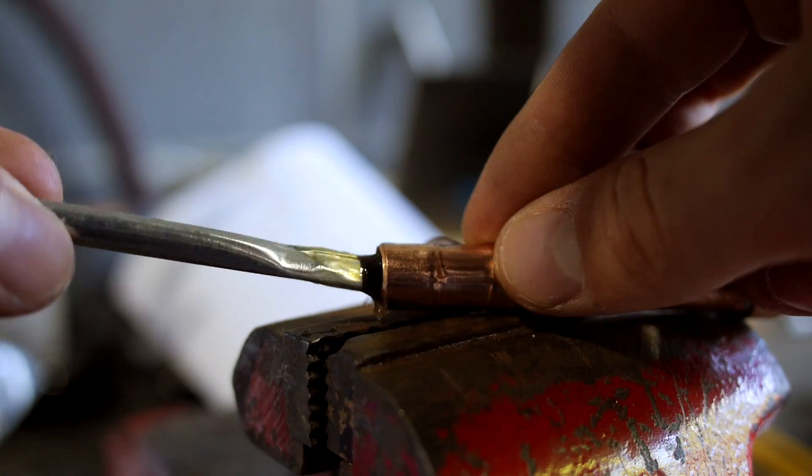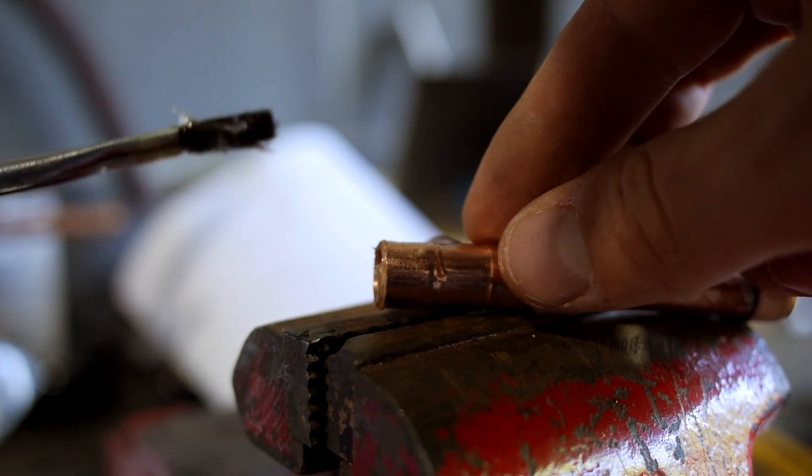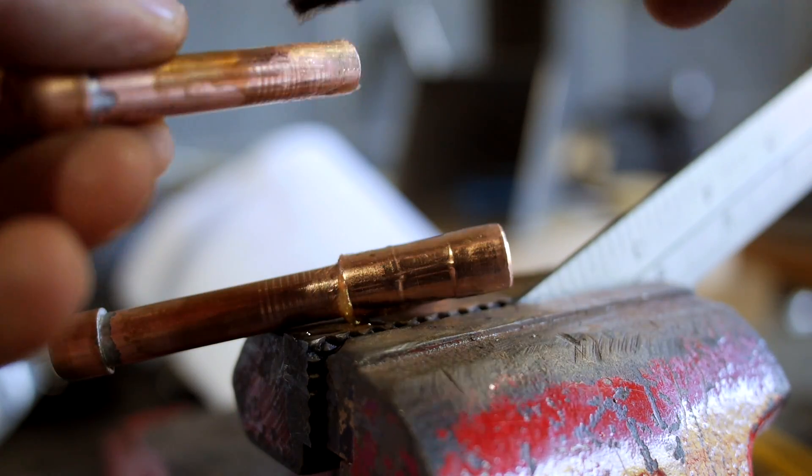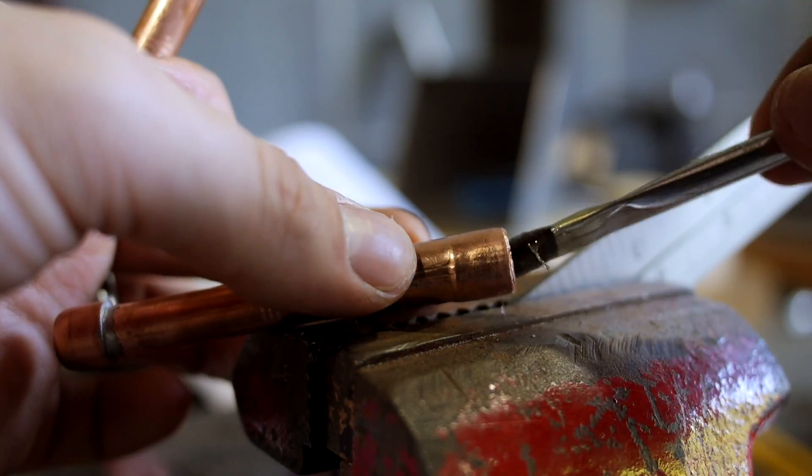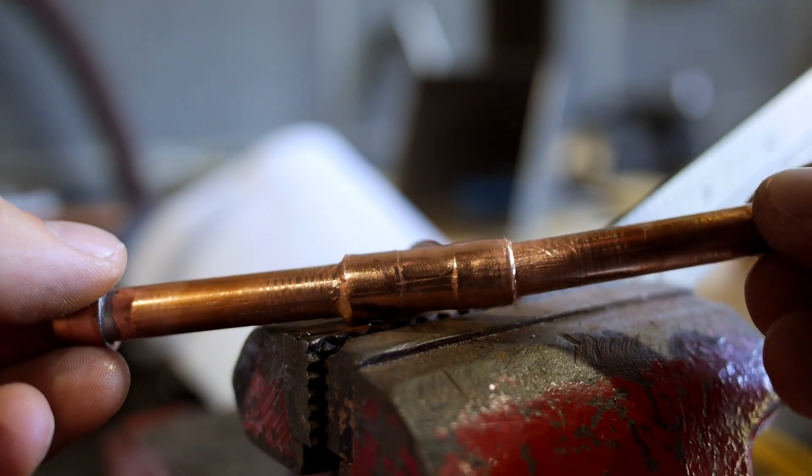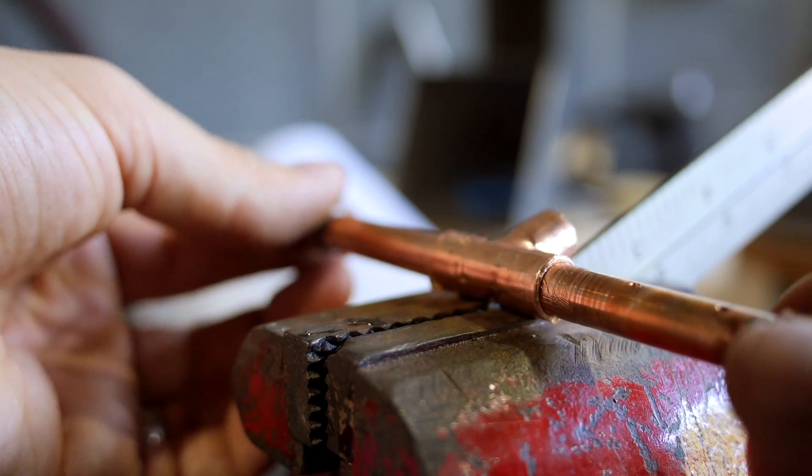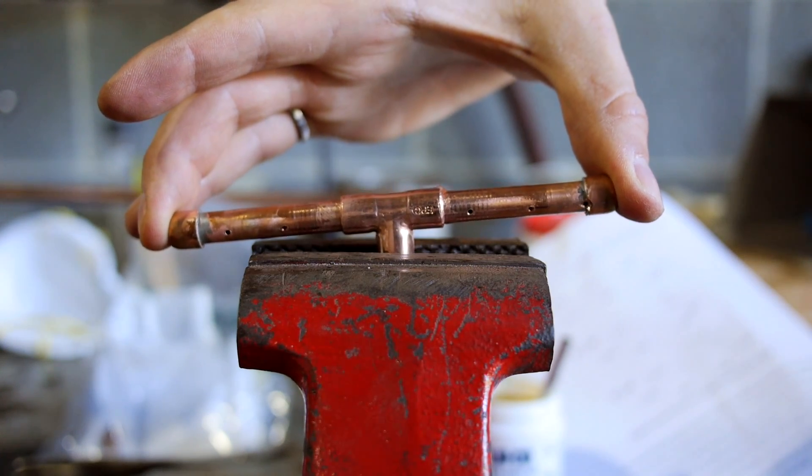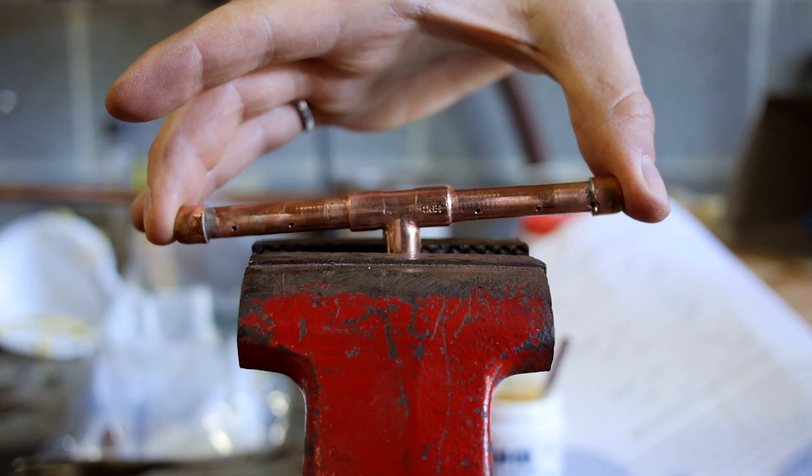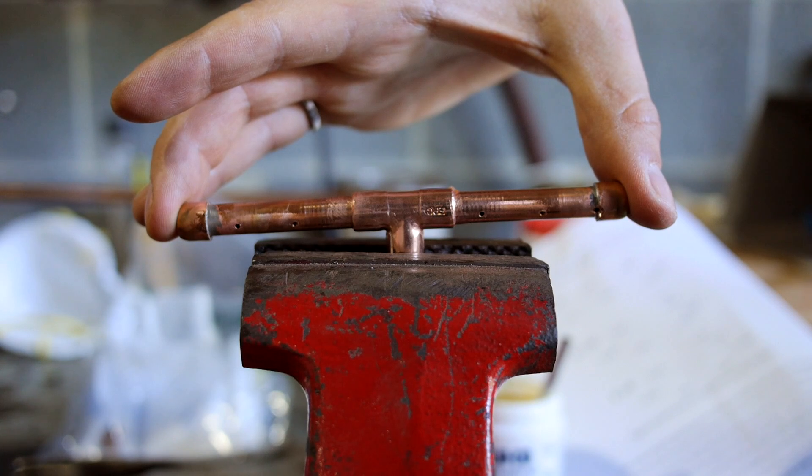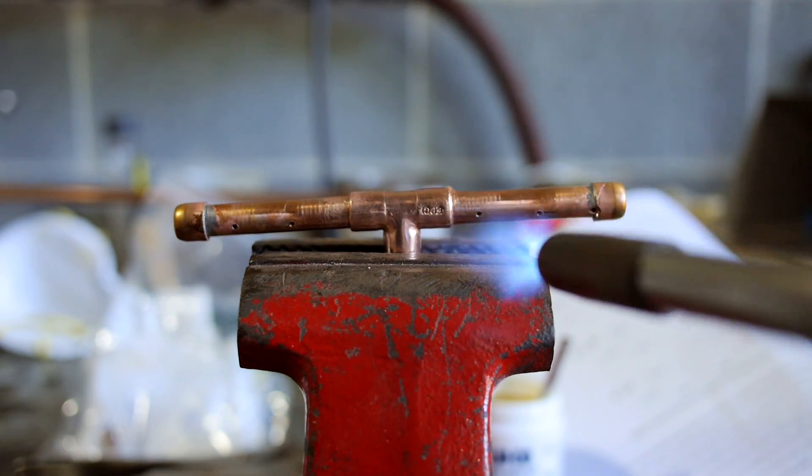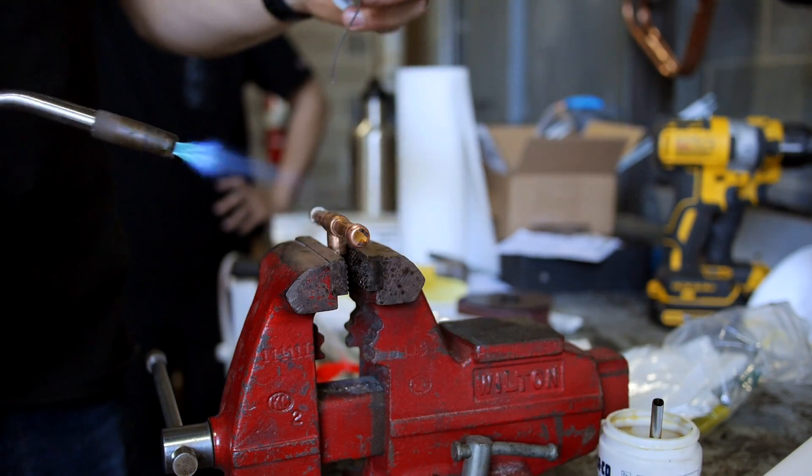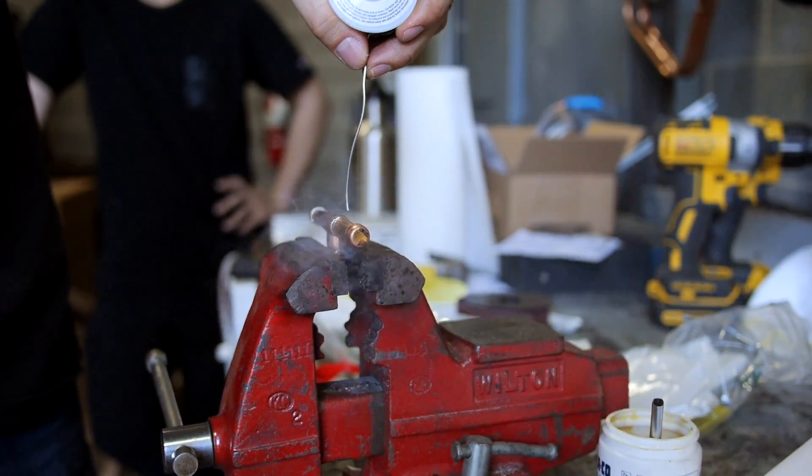Now a few notes on soldering connections where there's multiple joints next to each other. Generally, like in the case of this T-fitting, I like to flux everything up and assemble everything together all at once. Then once everything's assembled, I very carefully put them into a vise so that the joints are horizontal. If the joints aren't horizontal, as you heat one, you have the chance to unsolder the one next to it and then the part will just fall apart.